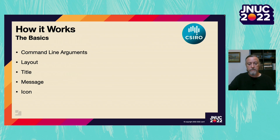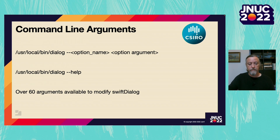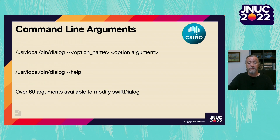Dialogue works by interpreting command line arguments, and these arguments are used to describe the layout of the dialogue you want to show. Command line arguments take the form of an option name with an option argument. All the options available are in the built-in documentation, which you can call by using the help argument. There are currently over 60 arguments available for use with Swift Dialogue.